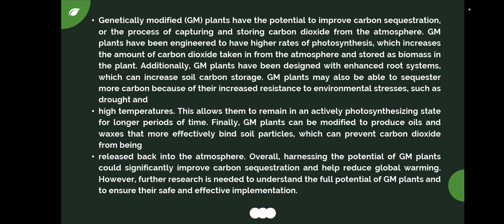Genetically modified plants may also sequester more carbon because of increased resistance to environmental stresses such as drought and flooding. At higher temperatures, this allows them to remain in an active photosynthesis stage for a longer period of time. GM plants can also be modified to produce oils and waxes that more effectively bind soil particles, preventing CO2 from being released back into the atmosphere. Overall, harnessing the potential of GM plants could significantly improve carbon sequestration and help reduce global warming. However, further research is needed to understand the full potential of GM plants and ensure their safe and effective implementation.